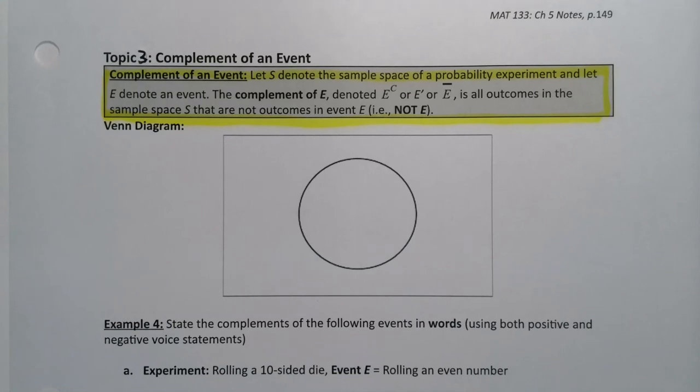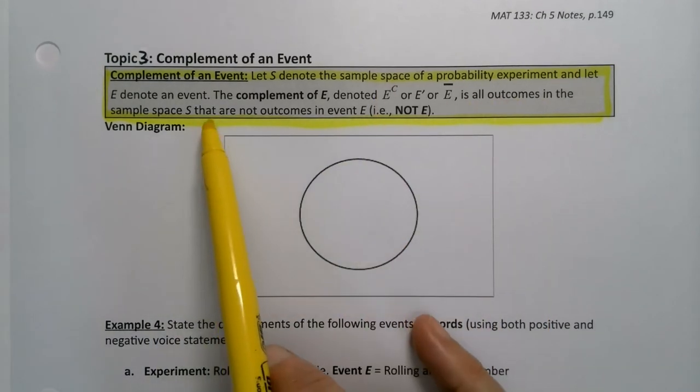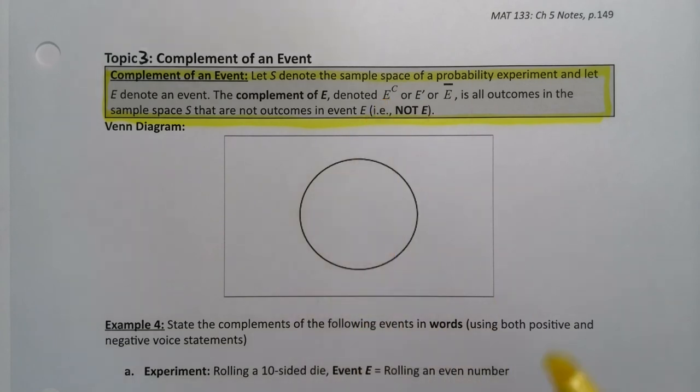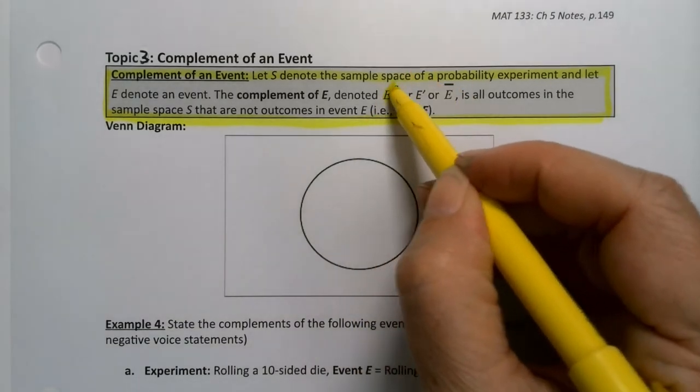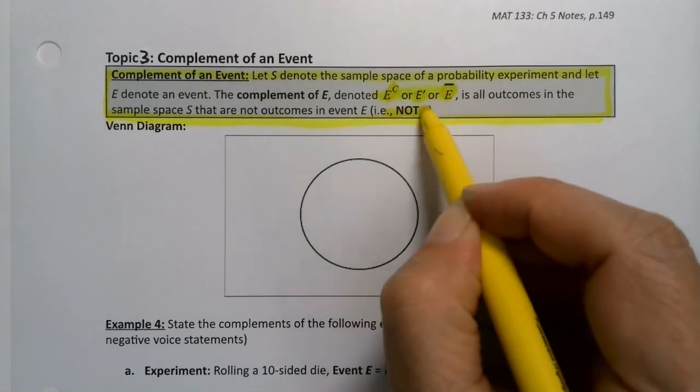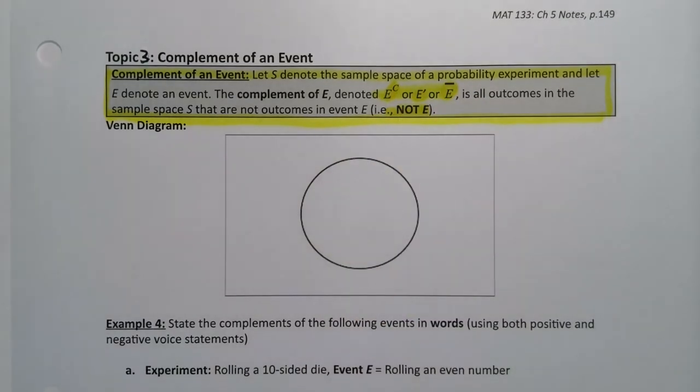We've learned the definition of disjoint and not disjoint, but to continue on we need to learn another definition, namely of the complement of an event. So the complement of an event is all the outcomes in the sample space that are not in event E. So it's denoted several ways. The most common for us is E with a little c after it, but you can actually do it as E prime or E bar. They all mean the same thing. They mean you're not in E.